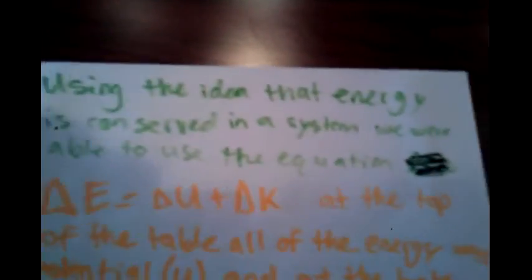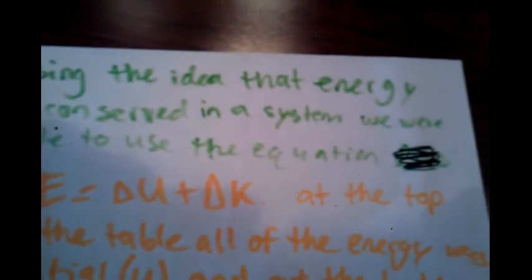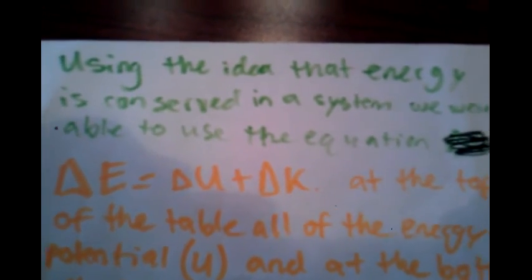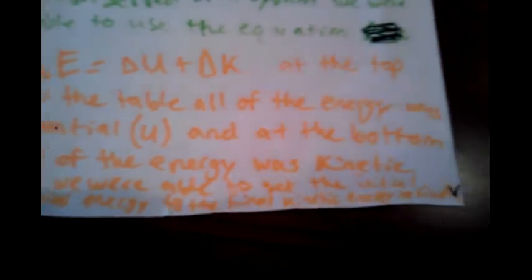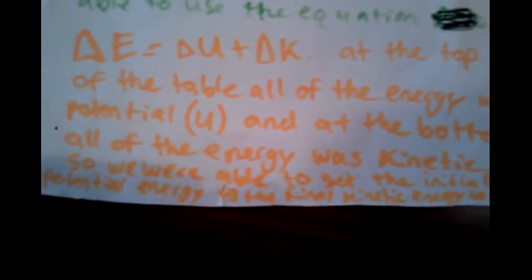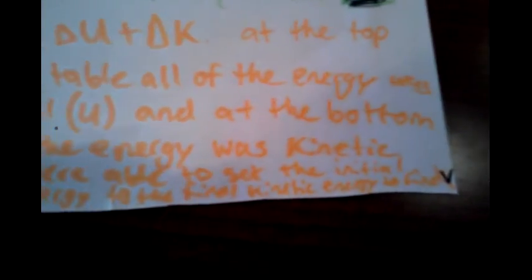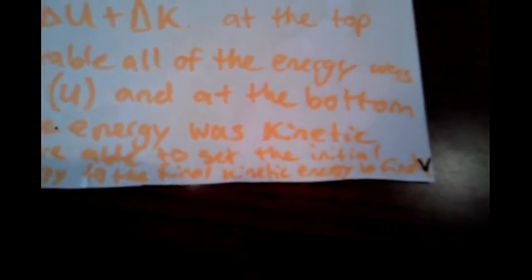Using the idea that energy is conserved in a system, we used the equation: change in energy equals change in potential energy plus change in kinetic energy. At the top of the table, all of the energy was potential, and at the bottom of the fall, all of the energy was kinetic. So we were able to set the initial potential energy equal to the final kinetic energy to find V.